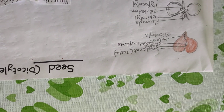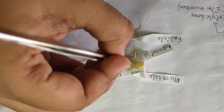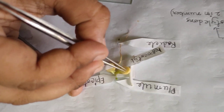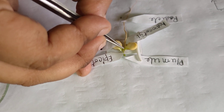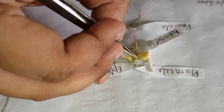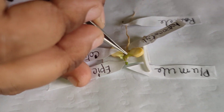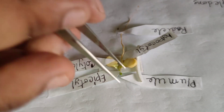Now, coming to the inner portion. After opening the gram seed, we can see the embryo axis. The cotyledon is attached to the embryo part with the help of the nodal zone. The nodal zone is the joining point of the cotyledon and the embryo.